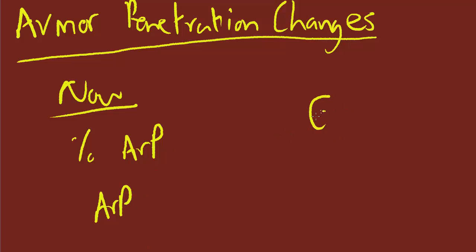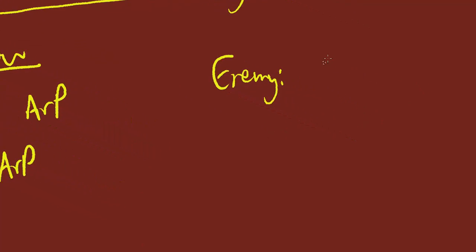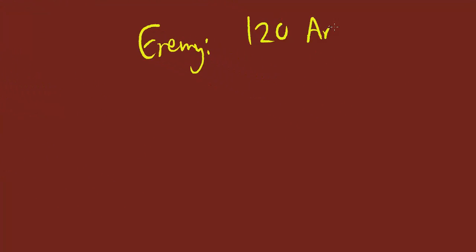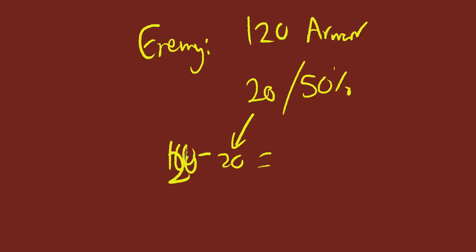So this means that if an enemy has 120 armor, and you have 50% armor penetration and 20 flat, it's going to go 120 minus this value, and that becomes 100.